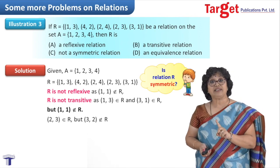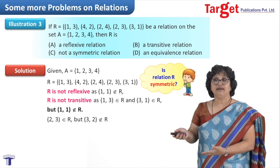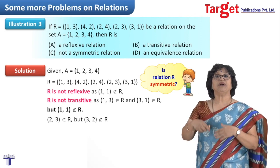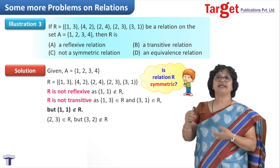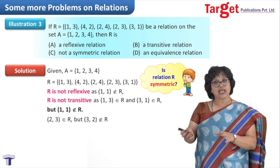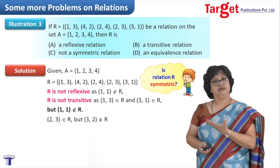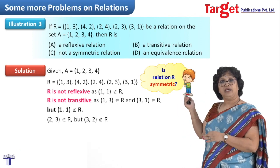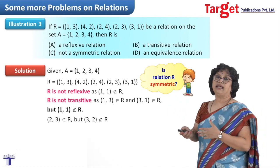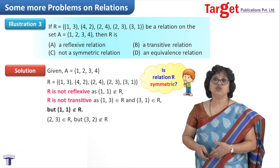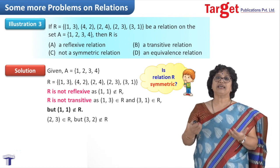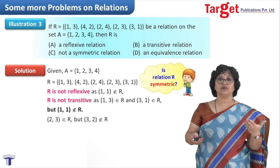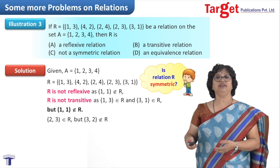Since the relation is not reflexive and not transitive, it cannot be an equivalence relation. The only remaining option is 'not symmetric,' which we have also confirmed by example. These three problems should give you more clarity on how to solve questions regarding equivalence relations, and whether a relation is reflexive, transitive, or symmetric. Stay tuned until I come with a new topic.